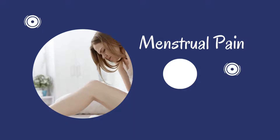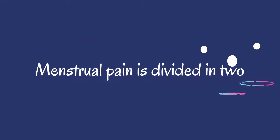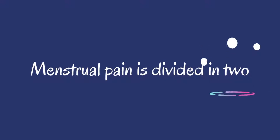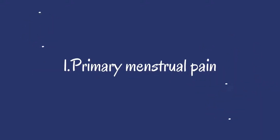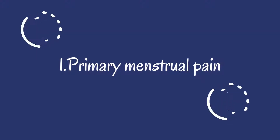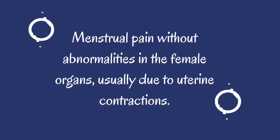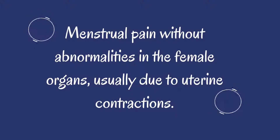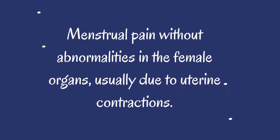Menstrual pain is divided in two. One: primary menstrual pain — menstrual pain without abnormalities in the female organs, usually due to uterine contractions.